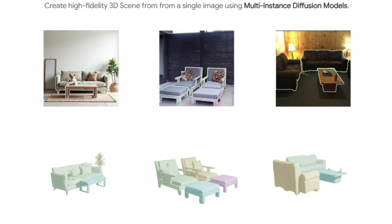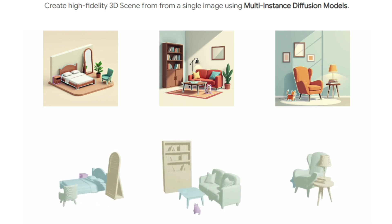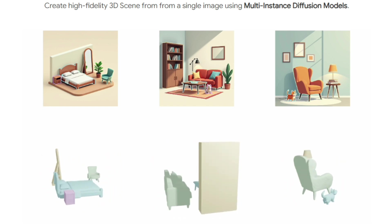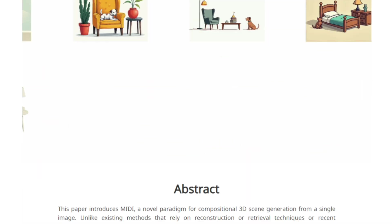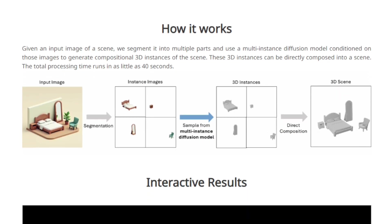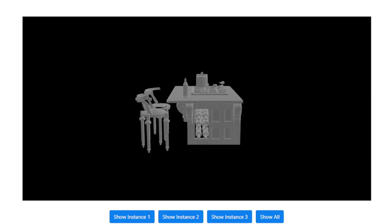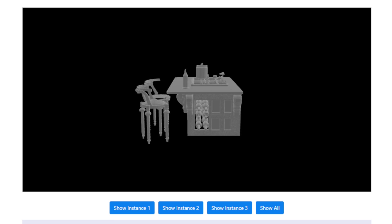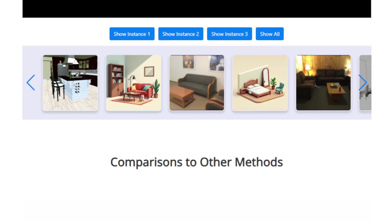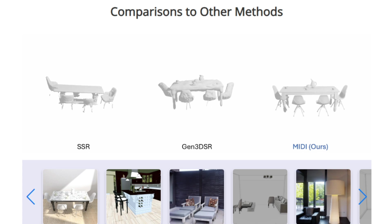Imagine you have a photograph of a living room. Traditional methods might reconstruct the scene piece by piece — first the sofa, then the lamp and the table — often leading to inconsistencies. MIDI, on the other hand, analyzes the entire image at once and generates all objects together, considering their spatial relationships from the start. This holistic approach speeds up the process and ensures all objects are contextually integrated. MIDI segments the input image into sections, employs a diffusion model to simultaneously create 3D renditions while maintaining scene context, and accurately captures how objects interact — such as a vase on a table or a chair beneath a desk.